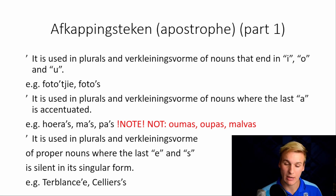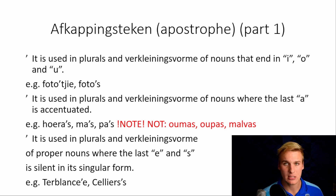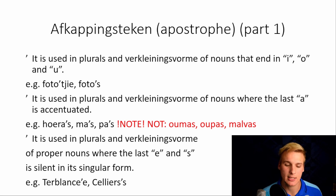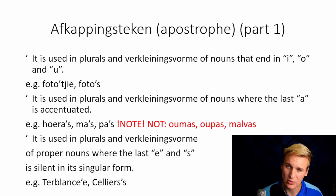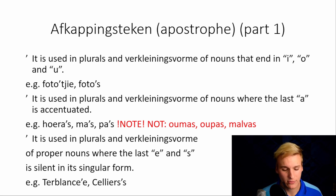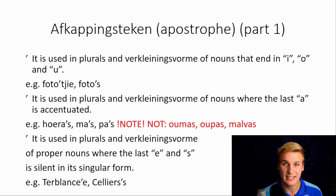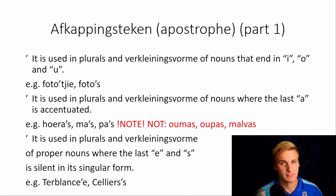The apostrophe is not used when the a is not emphasized. For example: omas, opas, malphas — these do not receive the apostrophe s. Mas and pas is your mother and father; omas is your grandmother; opa is your grandfather; malphas is a type of plant. The apostrophe is also used in plurals and diminutives of proper nouns where the last e or s is silent in its singular form. For example: Terblanche — Terblanche's. It's like saying 'the Flintstones' rather than 'the Flintstone.'